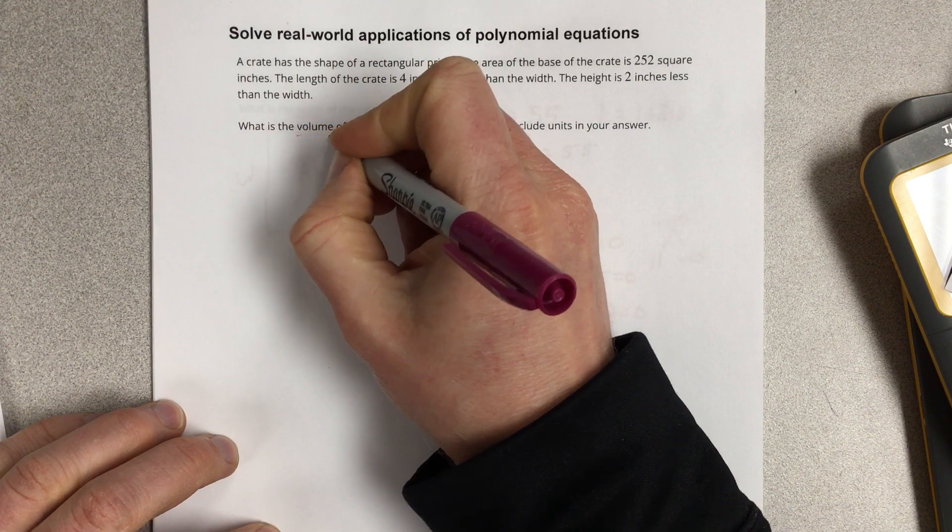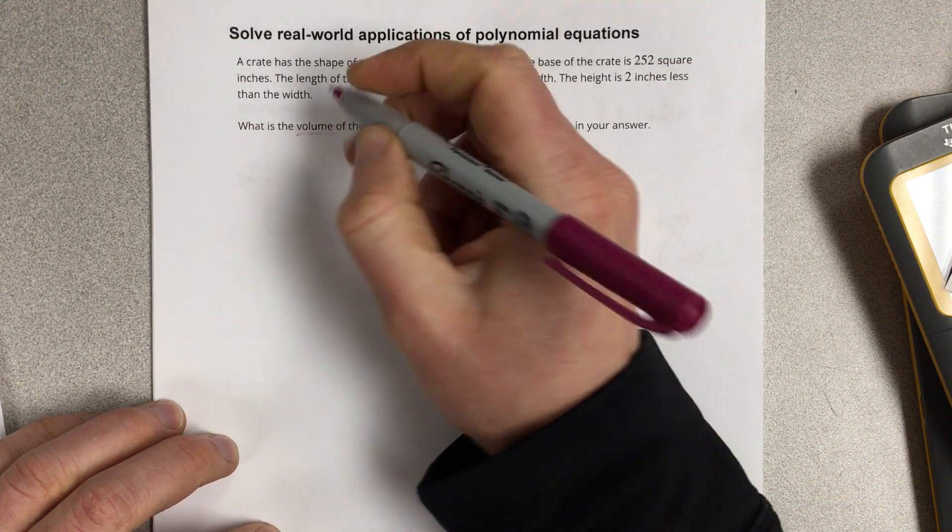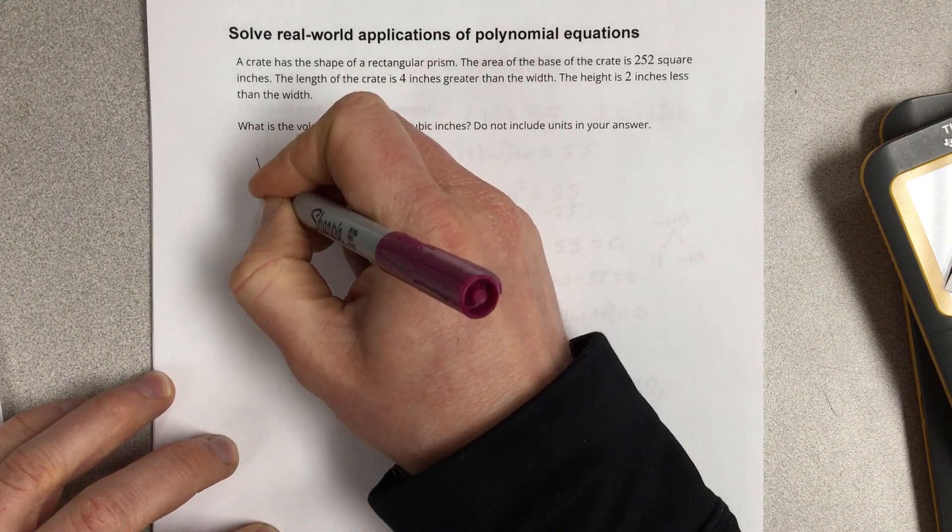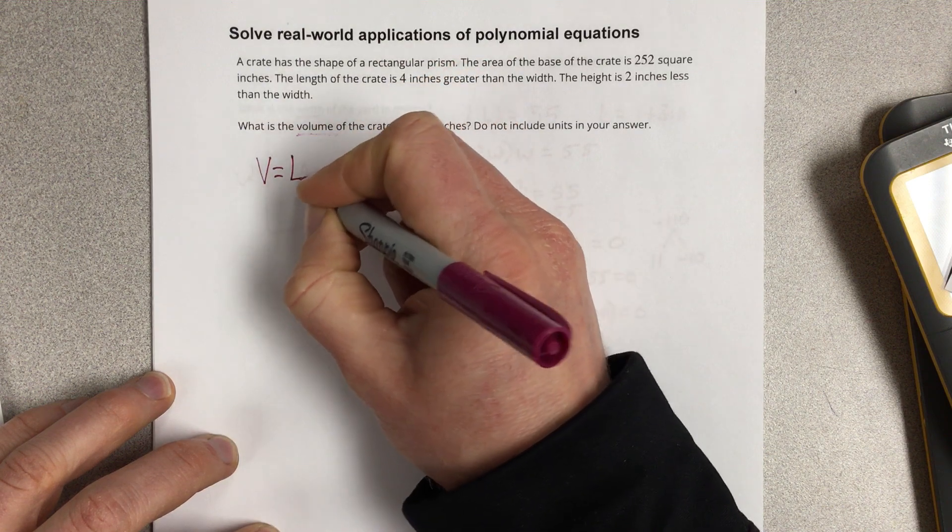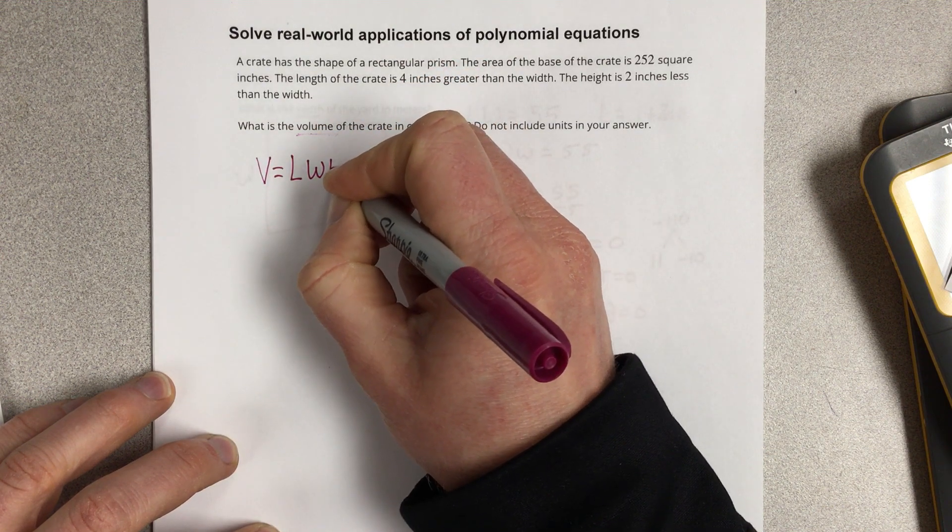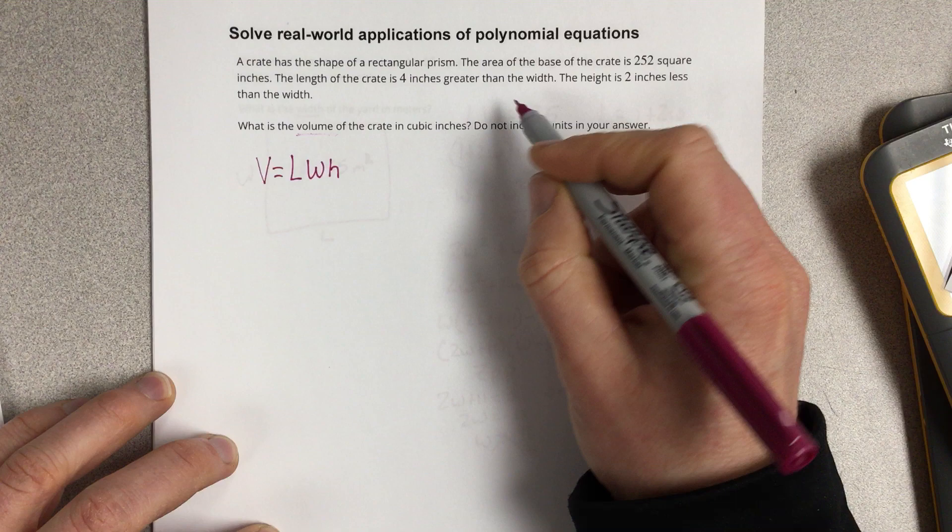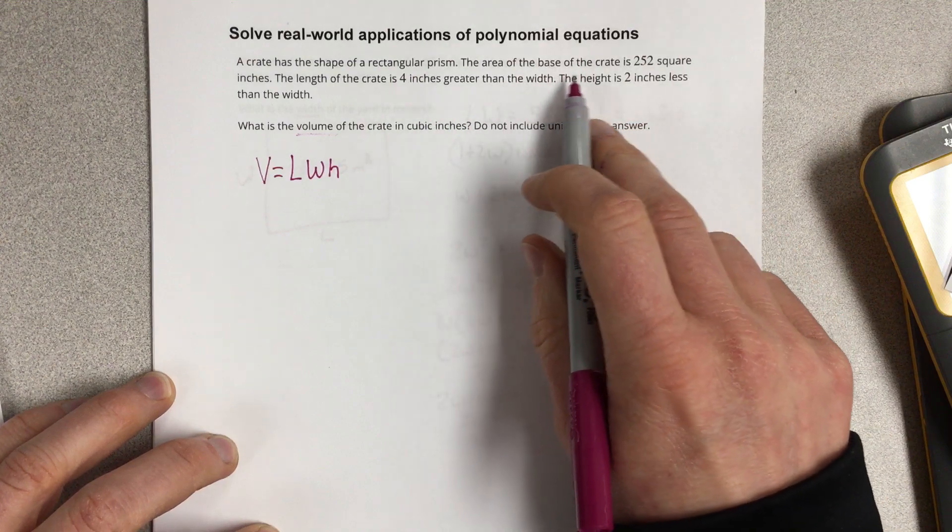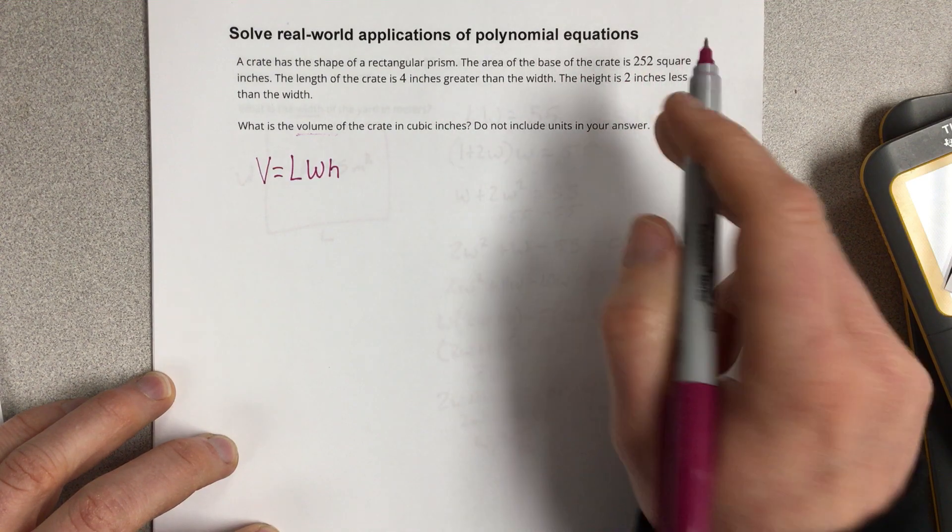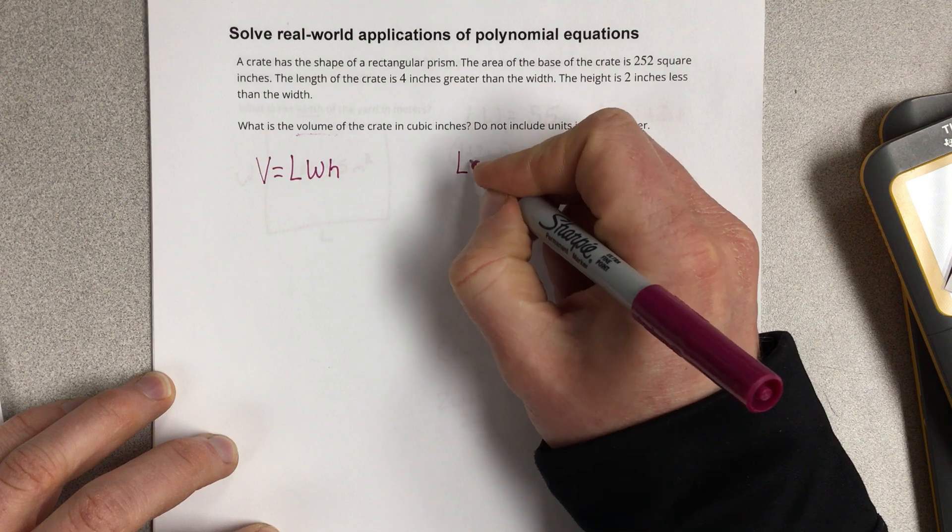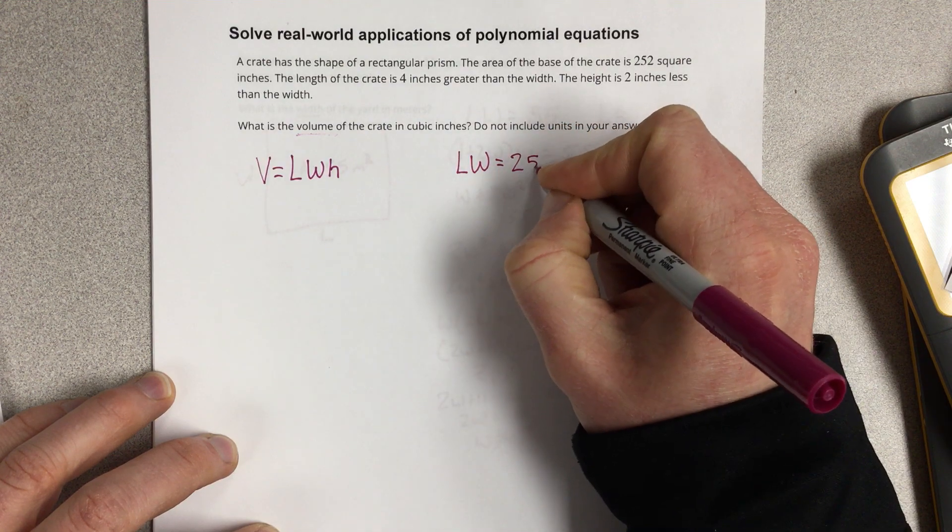So we want to know the volume of the crate. The volume of the crate is going to be equal to length times width times height. They tell us that the base of the crate is 252 square inches. So the base would be the length times the width and that's going to equal 252.